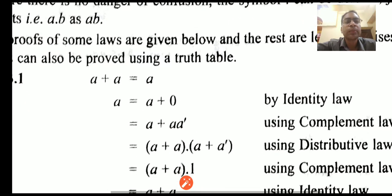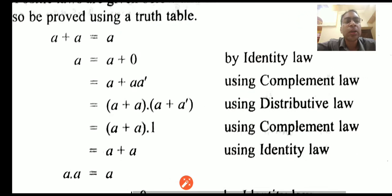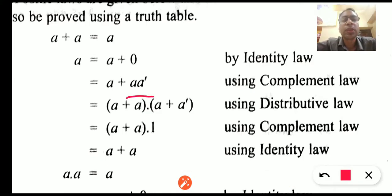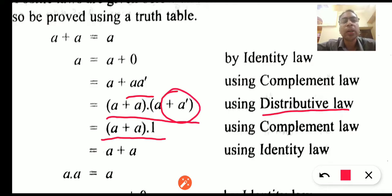Let us see some proofs. For example, a plus a is equal to a. We consider the right-hand side, which is a. A can be written as a plus 0 by the identity law. Zero can also be written as a dot a' with the help of the complement law. Now we use the distributive law and distribute this, giving us (a plus a) dot (a plus a'). Using the complement law, a plus a' equals 1, so this becomes (a plus a) dot 1, and by the identity law this equals a.